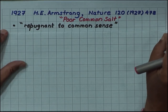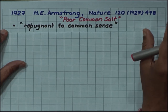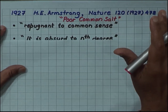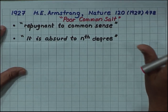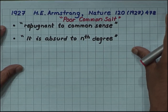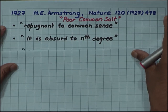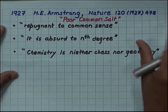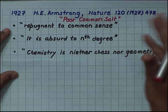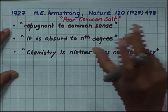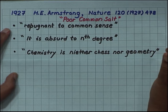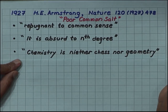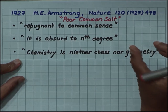Armstrong said that the non-existence of a sodium chloride molecule, which Bragg was proposing, is repugnant to common sense, because chemists were so familiar and happy with the sodium chloride molecule. He said it is absurd to the nth degree, and went on: 'Chemistry is neither chess nor geometry.' Remember, Bragg was saying that atoms are arranged like a chessboard pattern and the 1:1 ratio of NaCl is a geometrical result rather than a sodium-chloride chemical bond.